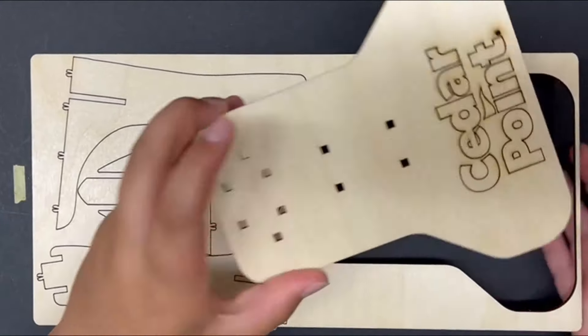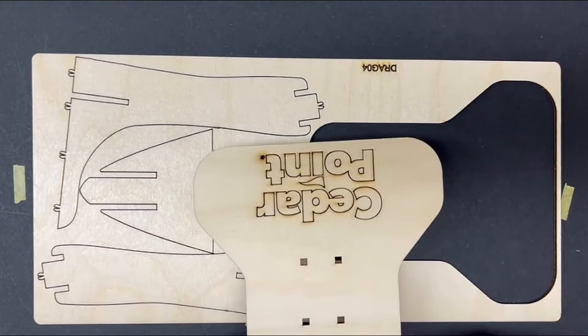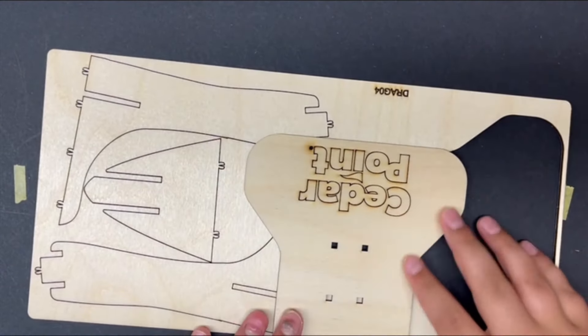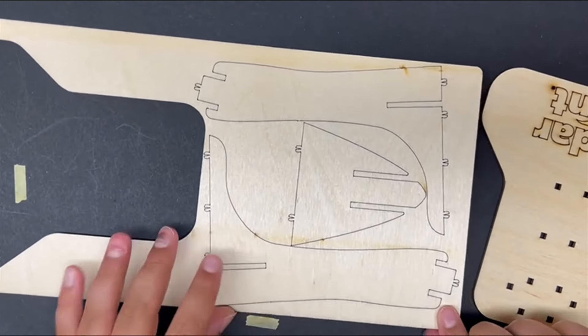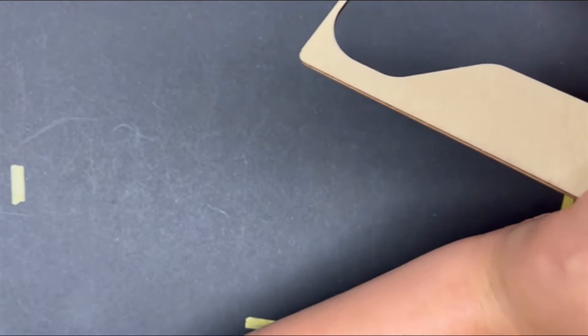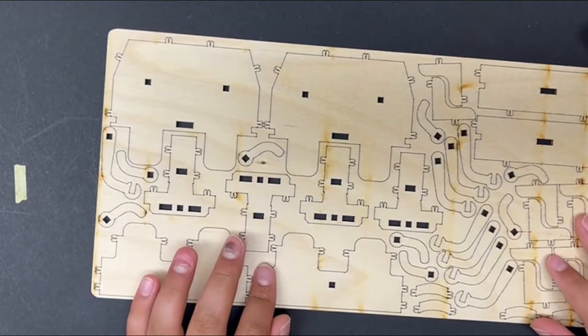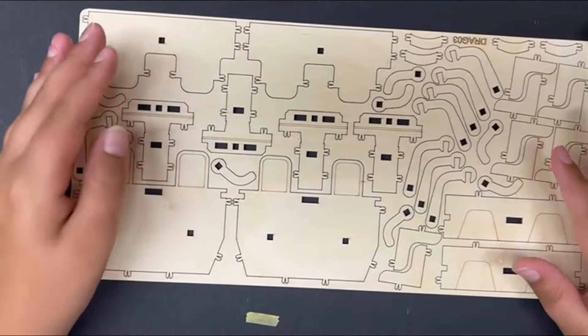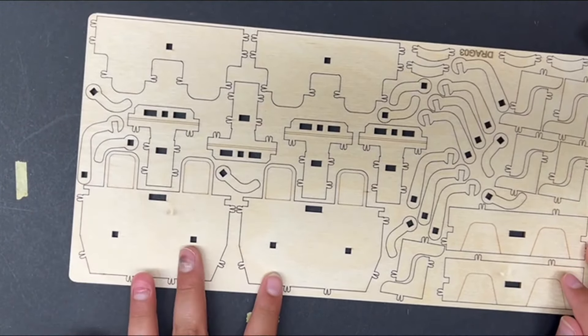Just pop out. And this one just says Cedar Point. And this looks like this might be what holds it up maybe. Let's grab another one of these and looks like this might be where it holds up the coaster maybe. Like this might be part of the coaster.